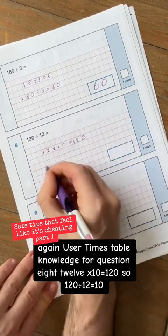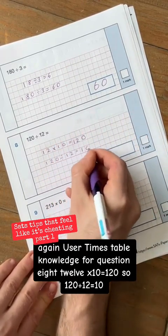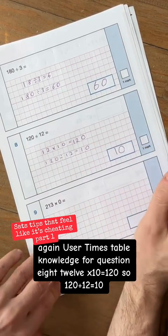Again, use your times table knowledge for question 8. 12 times 10 equals 120. So 120 divided by 12 equals 10.